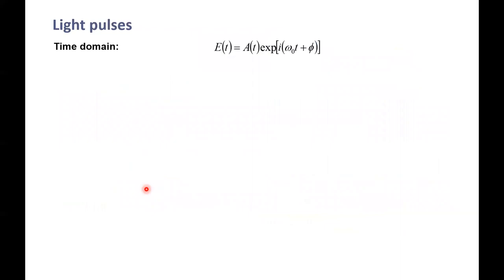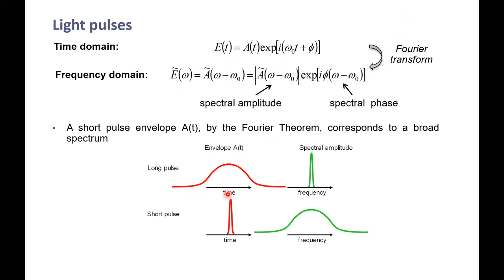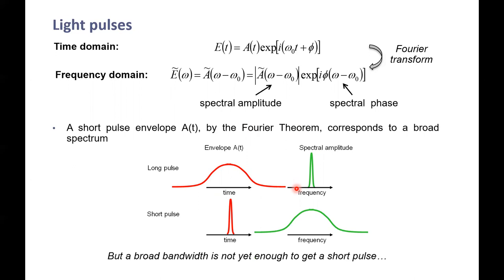Up to now we have talked about pulses in the temporal domain and choosing the shortest time duration. But it's very useful to look at light pulses in the frequency domain — for that we just need to do a Fourier transform from one to the other. A pulse in the frequency domain is described by a spectral amplitude and a spectral phase. As you know from Fourier transforms, a broad bandwidth in the frequency domain corresponds to a very short pulse in the temporal domain, and vice versa. So for having a short pulse, I need a large bandwidth — but this is not the only requisite.